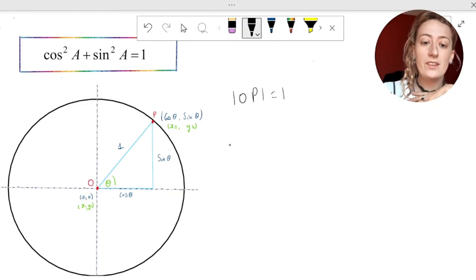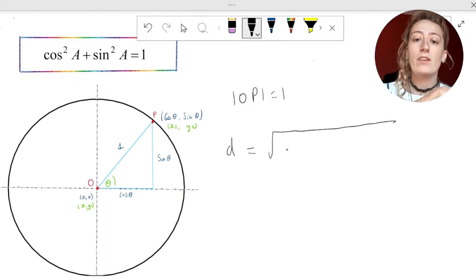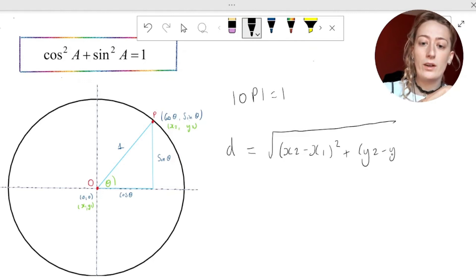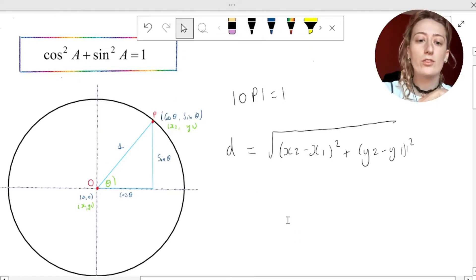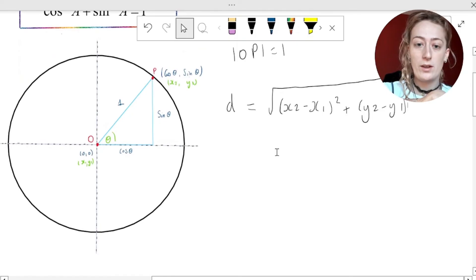We also know the distance between any two points on a plane is given by the distance formula, this is in your log tables under corner geometry, by the square root of x2 minus x1 all squared plus y2 minus y1 all squared. Now, really nicely, we've already labeled these things in our construction. So it's just a matter of subbing in zero, zero as x1, y1, cos theta sine theta is x2, y2 into our distance formula.